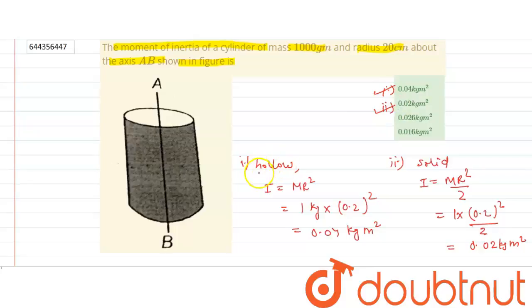So the moment of inertia of the cylinder, if it's hollow, is 0.04 kg·m². If it's solid, it's 0.02 kg·m². Thank you.